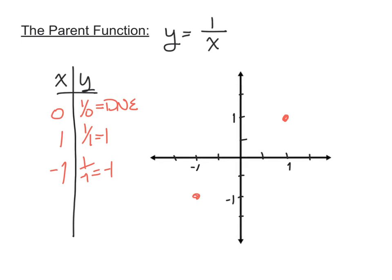That's not very helpful, so we're going to need some more points. If we pick x equals one half, then 1 over one half is 2, because dividing by one half is the same as multiplying by 2. So at x equals one half, y is 2. And at x equals 2, 1 over 2 gives us one half. So at x equals 2, y equals one half.